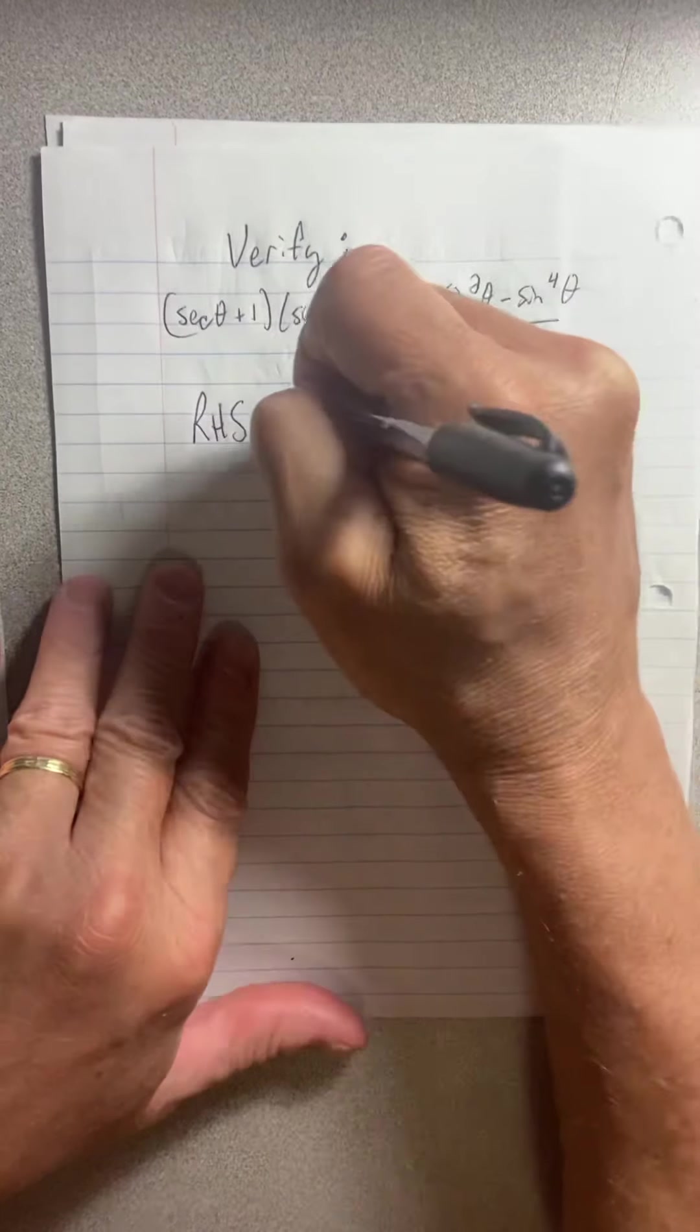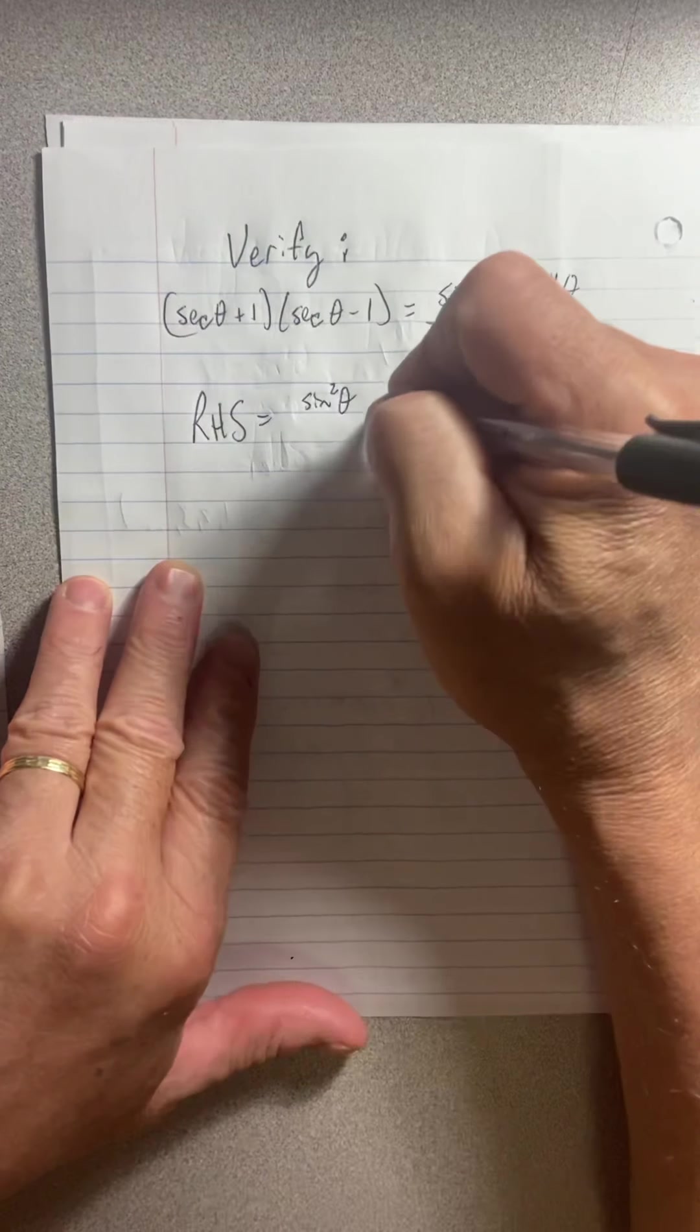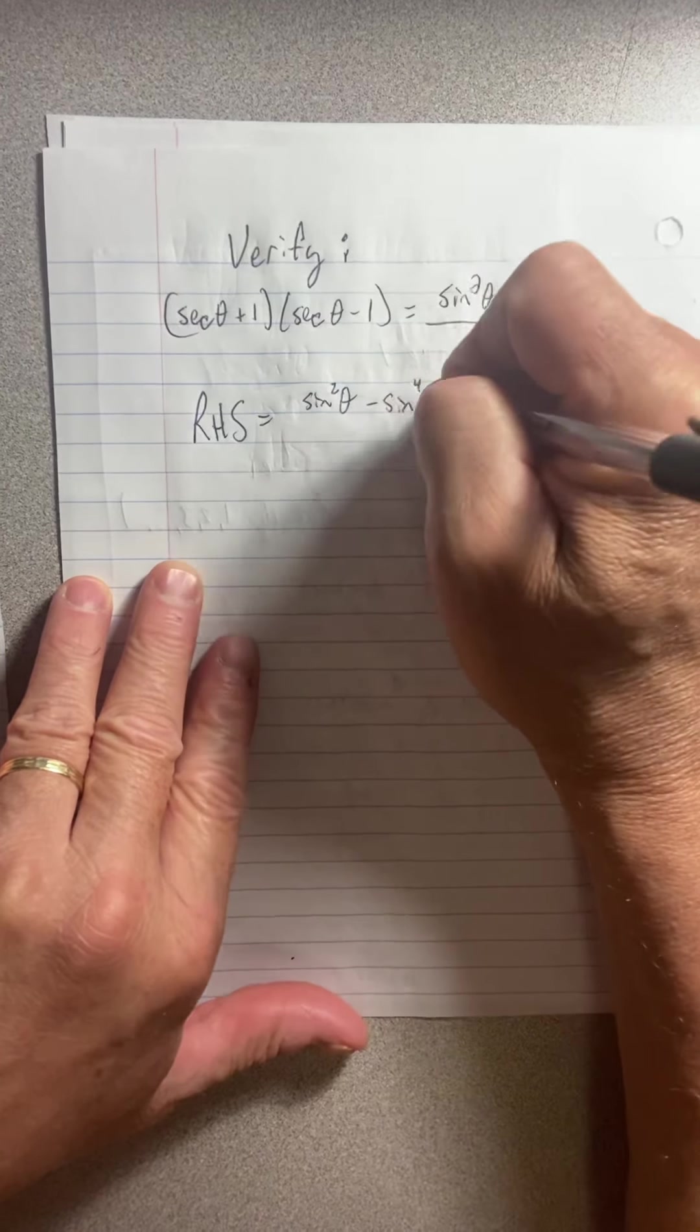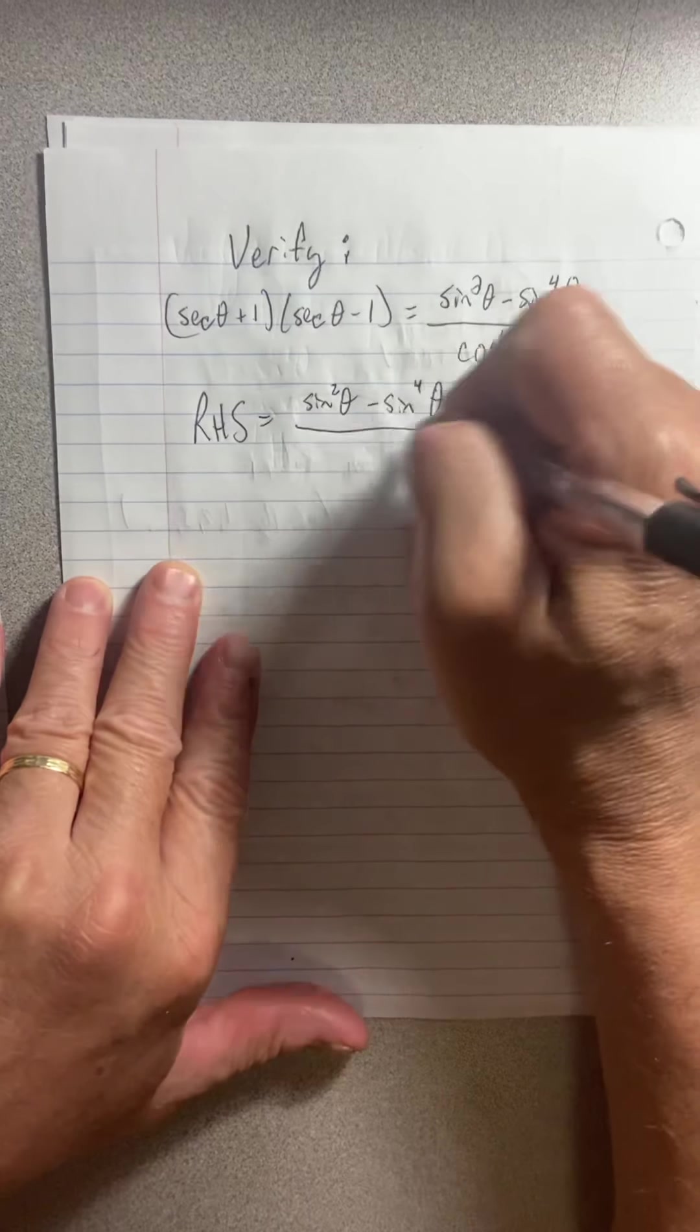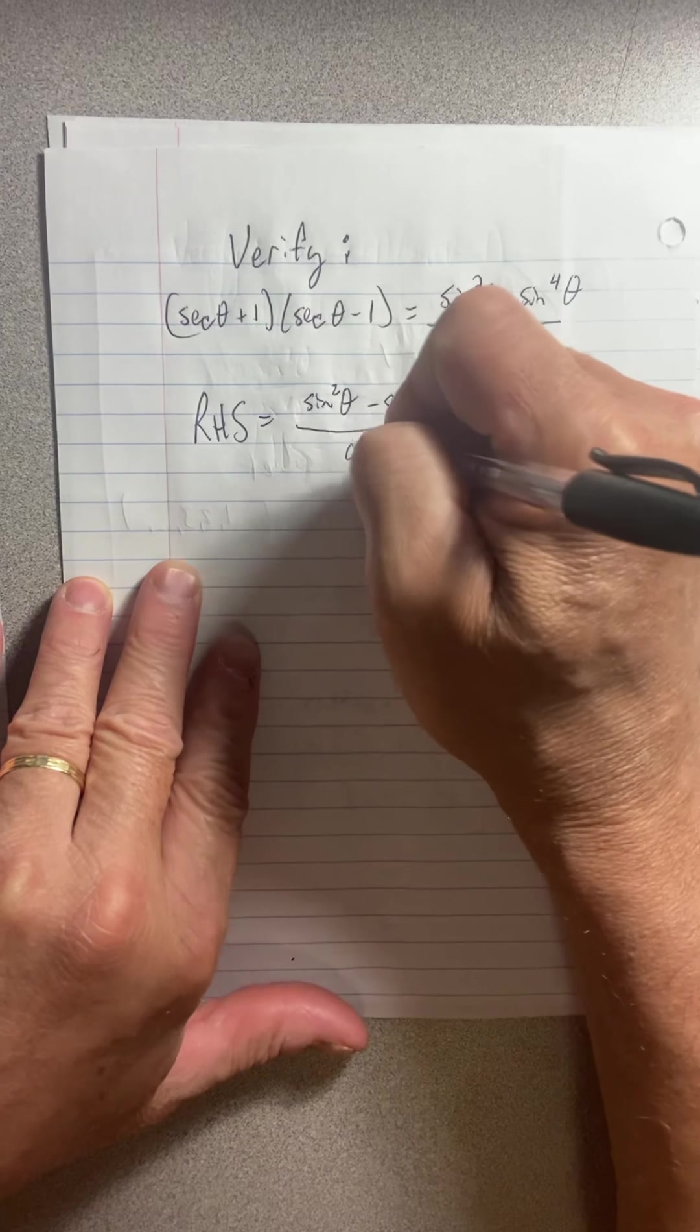So I start with sine squared theta minus sine to the fourth theta all over cosine to the fourth theta.